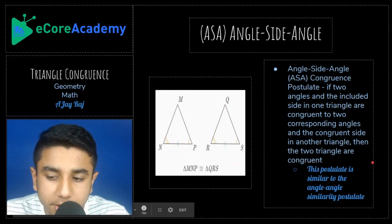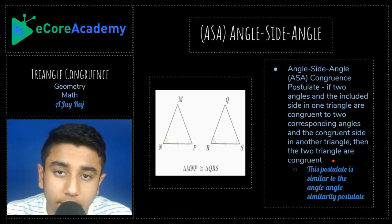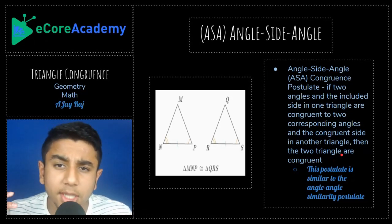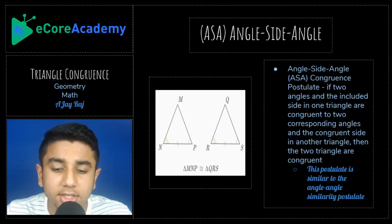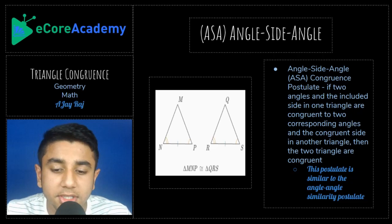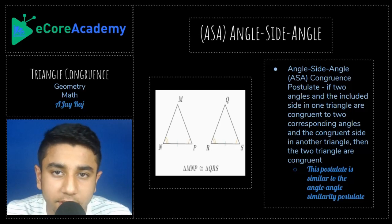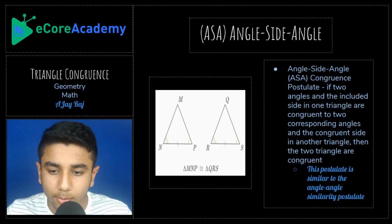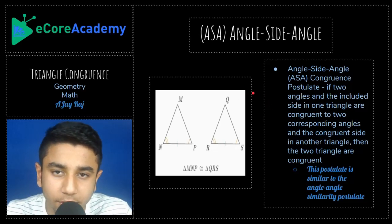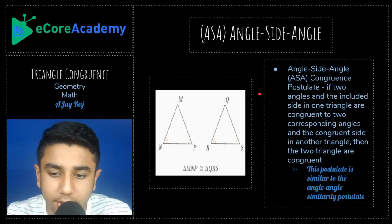This ASA postulate is similar to the Angle-Angle similarity postulate. Unlike congruence, similarity involves a constant ratio in side length — similar figures have the same angle measures but not the same side lengths, like enlarged vs. smaller figures through dilation. For the Angle-Angle similarity postulate, if you're given two angles in a triangle you automatically know the third angle, proving similarity. But for congruence, you also need representation from the sides, since the triangles must be exactly the same.